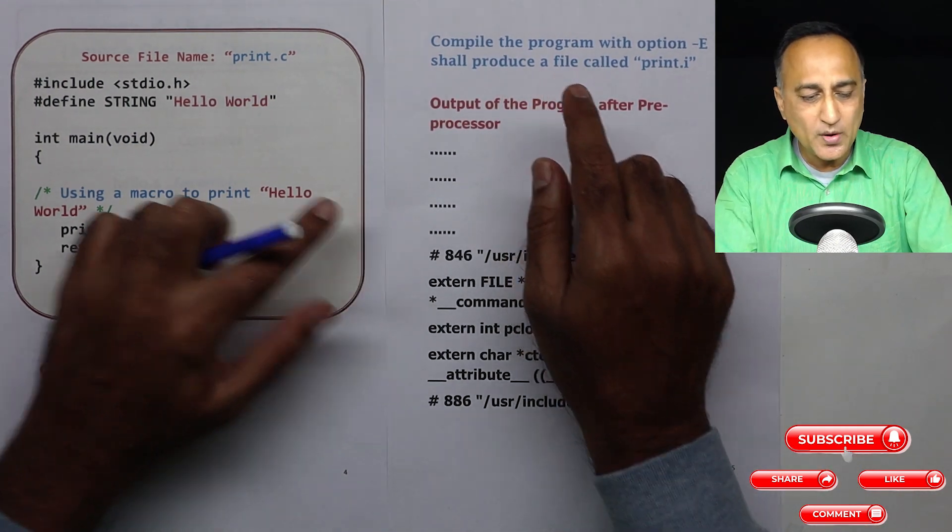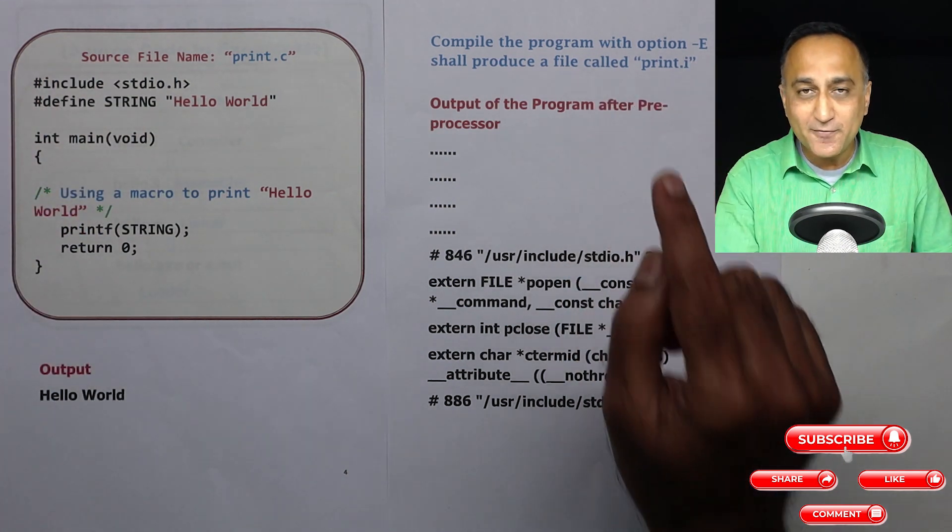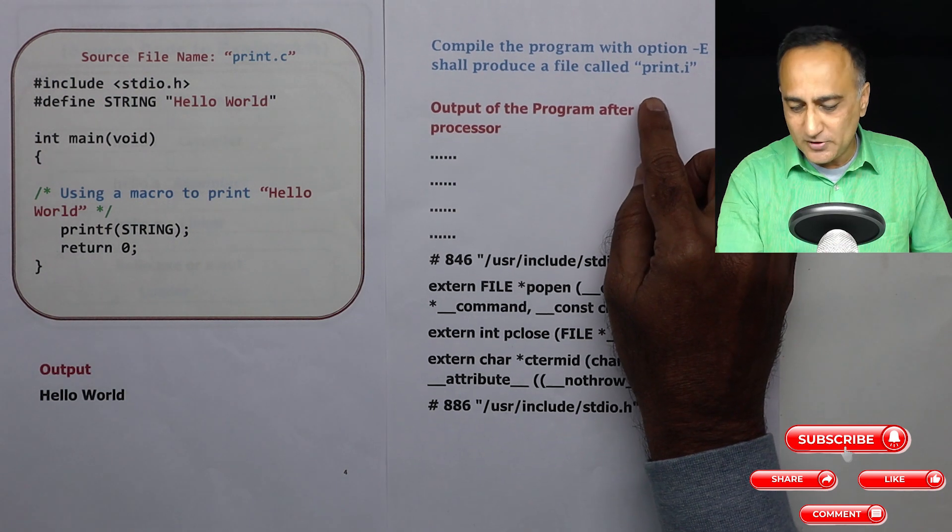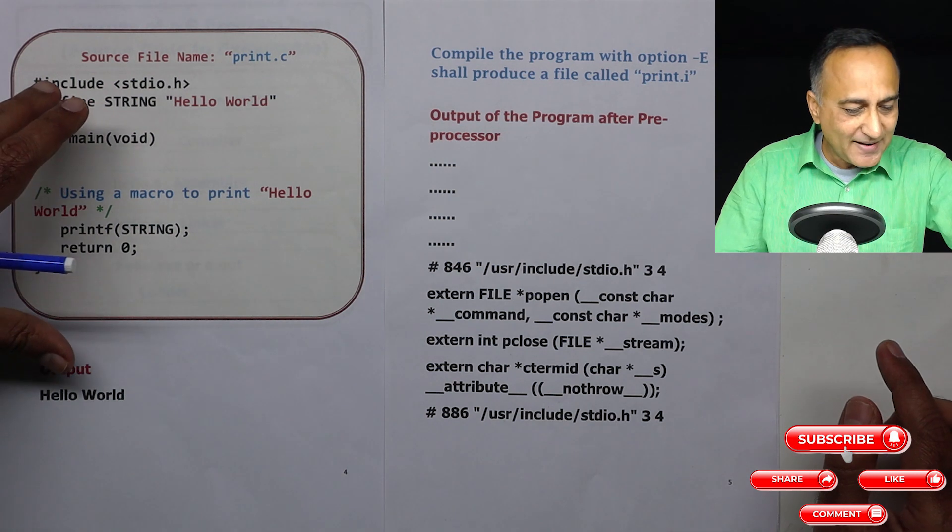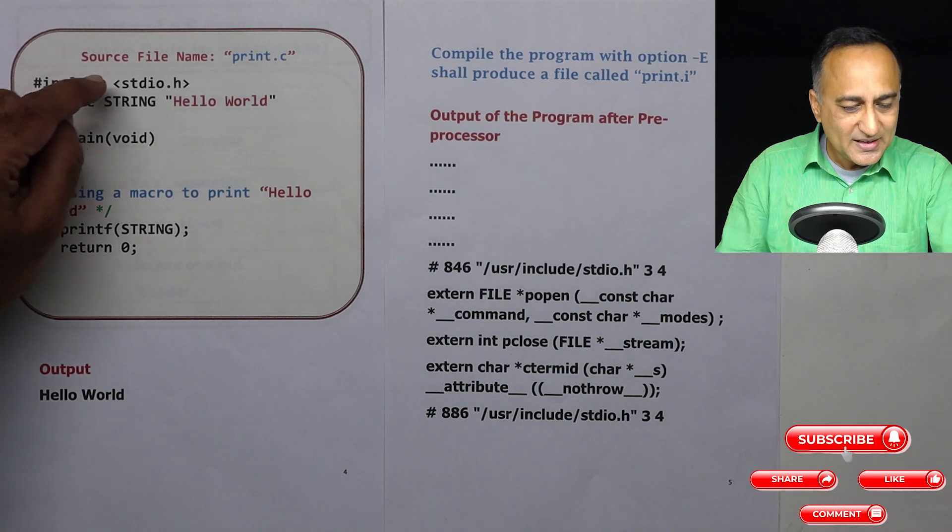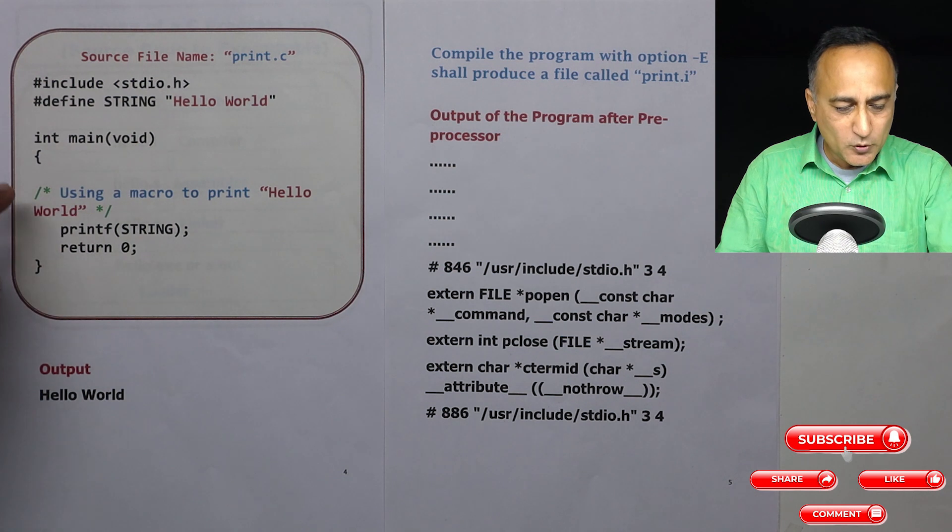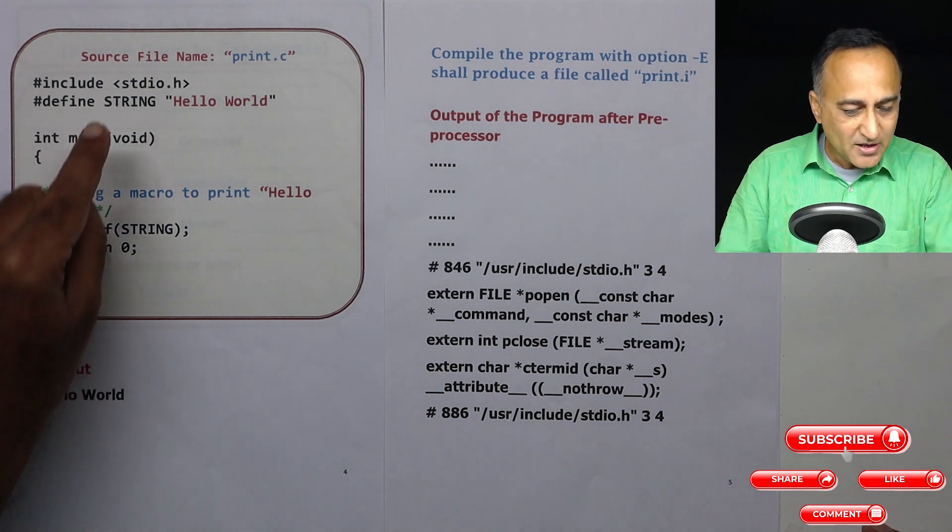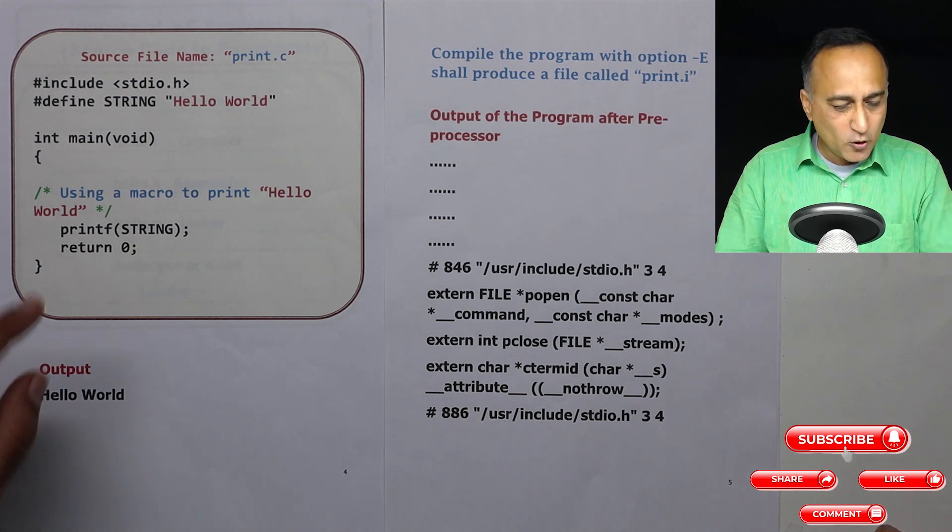Using the GCC when I compile this particular code with the E flag it shall produce a file which has been preprocessed only. That means it has only been sent to the preprocessor. The output of the preprocessor happens to be a file called print.i. Now when this file is sent to the preprocessor three things happen. The first thing is at this point the contents of the header file stdio.h are copied. Then number two, this comment is removed because the job of the preprocessor is to remove comments.